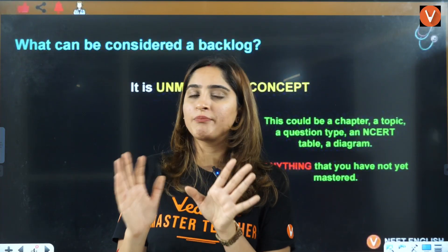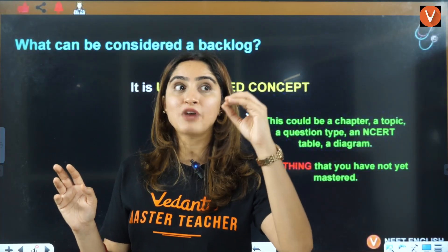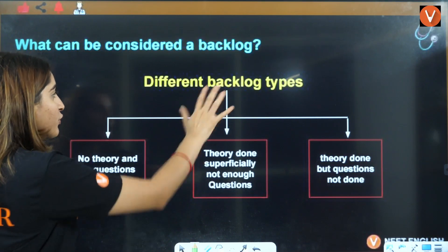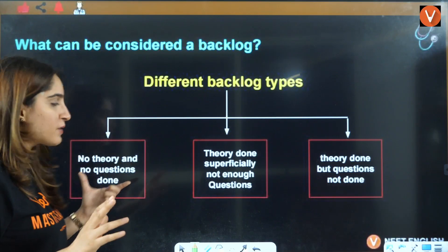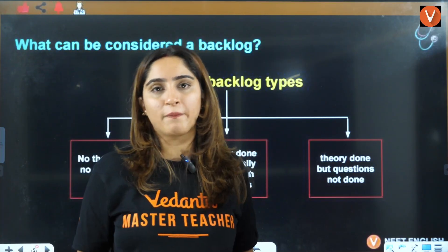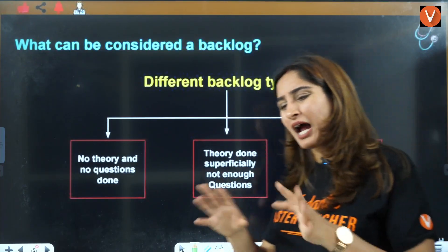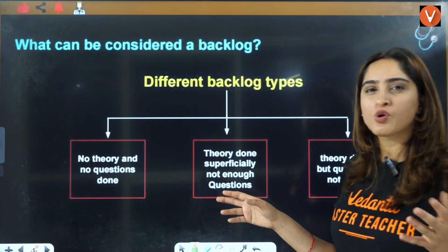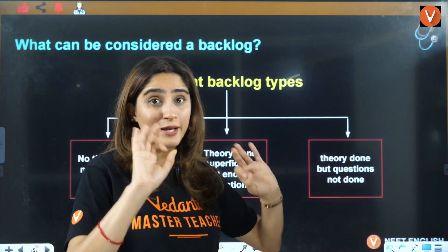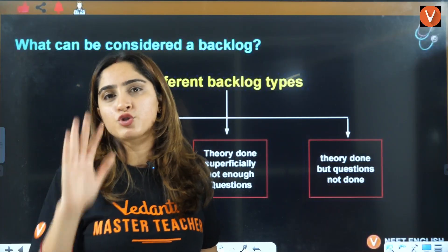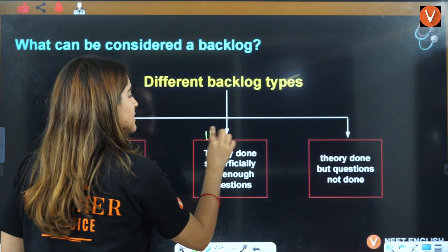There are three different types of backlogs. First: no theory, no questions done — very rare chapters where you've never touched the topic. Second: you know some theory, have solved some questions maybe at board level, but not at NEET level. Third: theory you know well and are confident about, but you haven't solved enough questions. Write down your basic chapters under each of these three categories.